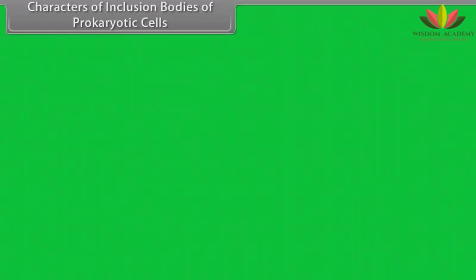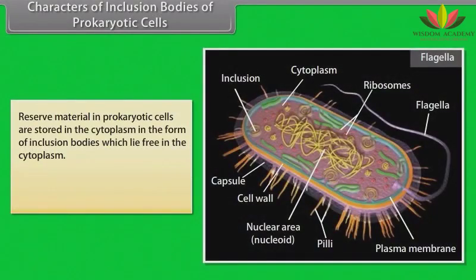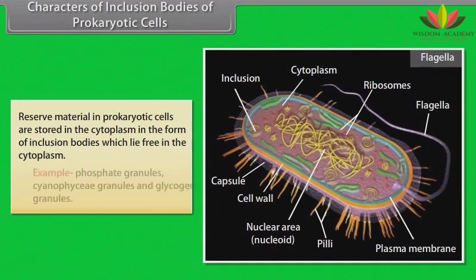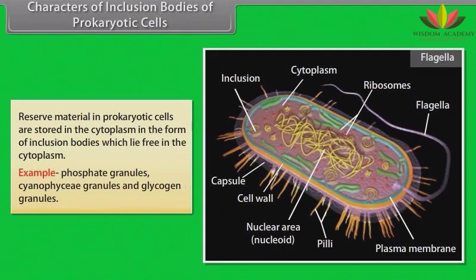Reserve material in prokaryotic cells is stored in the cytoplasm in the form of inclusion bodies, which lie free in the cytoplasm. Examples include phosphate granules, cyanophycin granules, and glycogen granules.